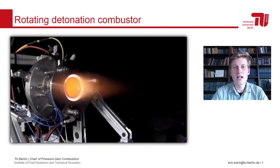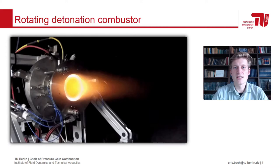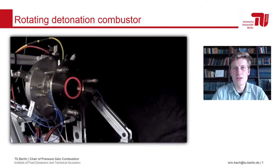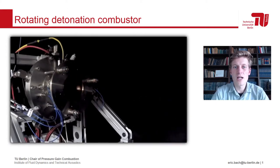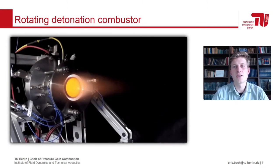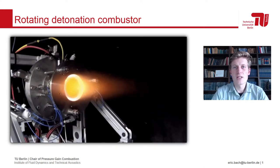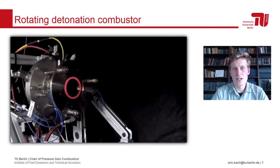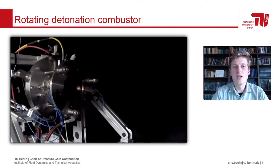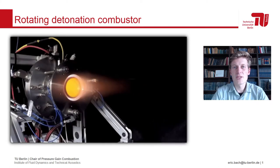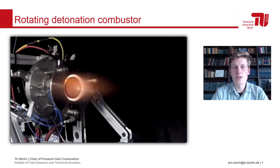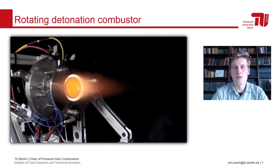RDCs have high power densities and constitute a harsh environment for any instrumentation. Additionally, the flow is highly unsteady and fluctuates in the kilohertz range. This clip from our lab shows a six-second run at approximately one megawatt of thermal power.